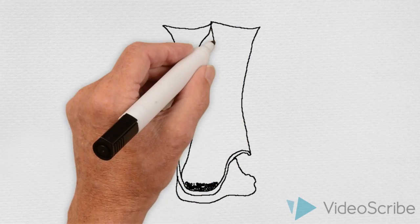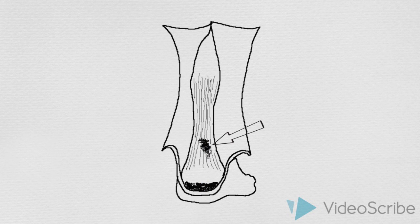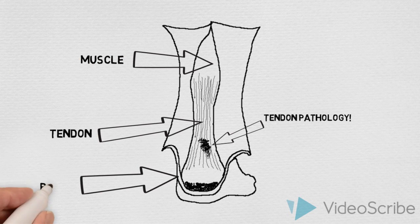This video is a visualization of work by Cook and Purdom that proposes a continuum model of tendon pathology. A simple view of tendons is that they attach muscle to bone allowing movement of a joint. However, there is more to their role and each tendon is different as it has a different function.